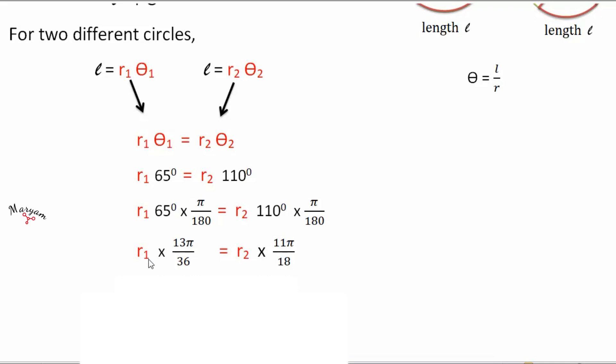As we need to find the ratio of two radii, we will take R terms on one side and the pi terms on the other side. Now, R1 by R2 is equal to 11 pi by 18 times 36 upon 13 pi.